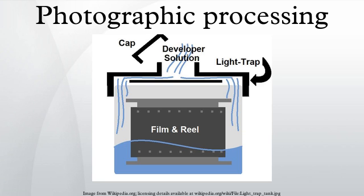In selenium toning, the image silver is changed to silver selenide. In sepia toning, the image is converted to silver sulfide. These chemicals are more resistant to atmospheric oxidizing agents than silver.